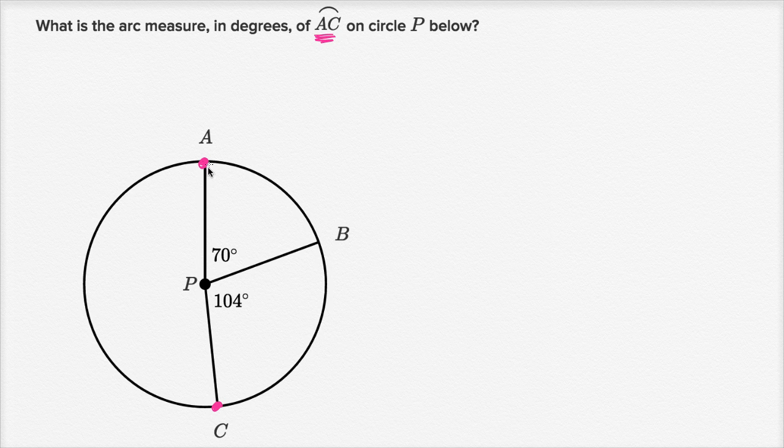When we talk about the minor arc, there's two potential arcs that connect point A and point C. There's the one here on the left, and then there's the one on the right. And since C isn't exactly straight down from A, it's a little bit to the right, the shorter arc, the arc with a smaller length, or the minor arc is going to be this one that I'm depicting here on the right.